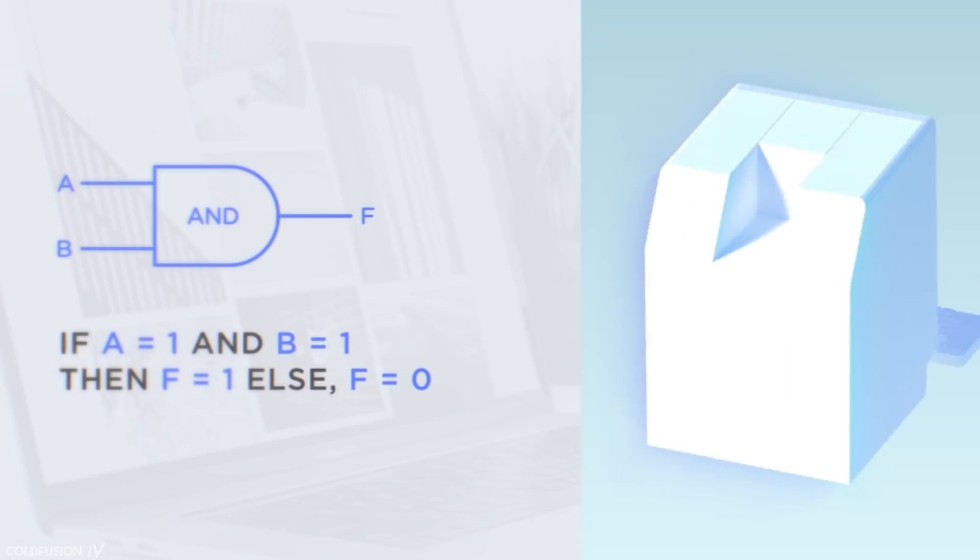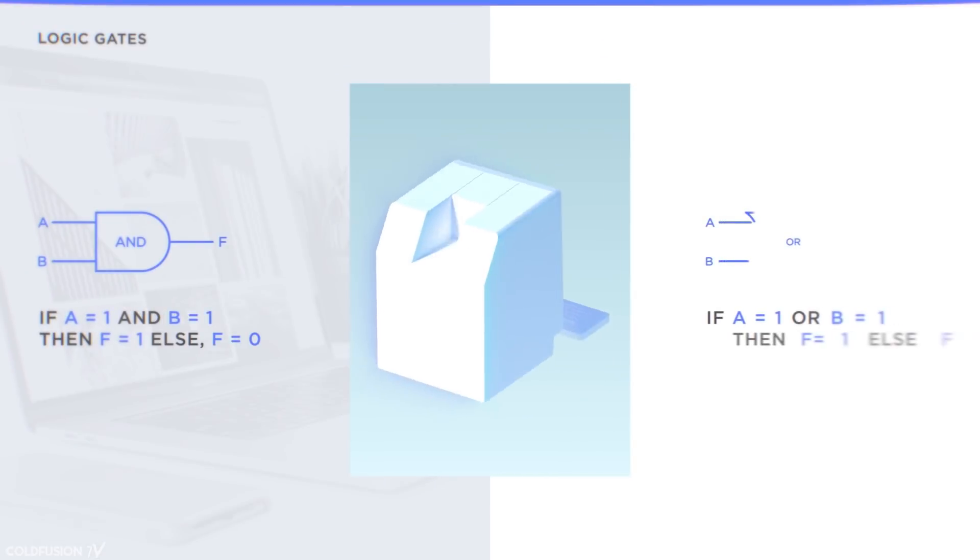Classical computers use logic gates to run functions. These take inputs and produce an output. This means a gate produces a 1 if both inputs are a 1. An OR gate produces a 1 if at least one of the inputs is a 1.